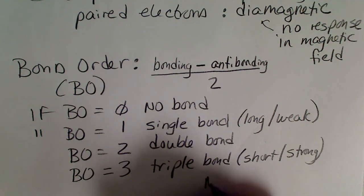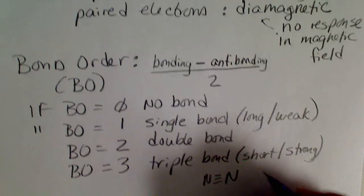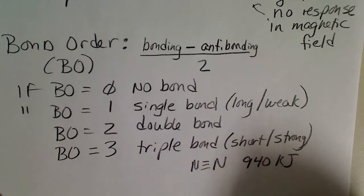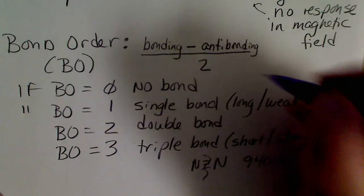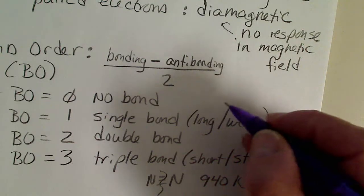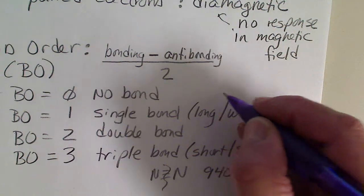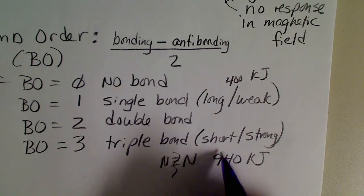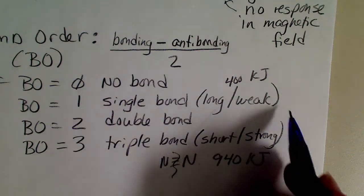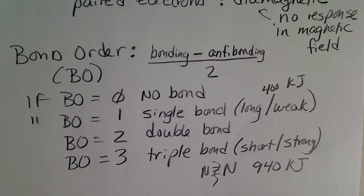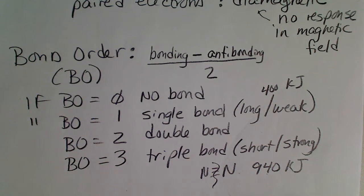For example, a nitrogen-nitrogen triple bond takes about 940 kilojoules to break. A single bond may be somewhere from a couple hundred kilojoules, I'll just put 400 kilojoules. So it takes a lot more energy to break a triple bond than it does a single bond. Once we have built the diagram, we will calculate the bond order.